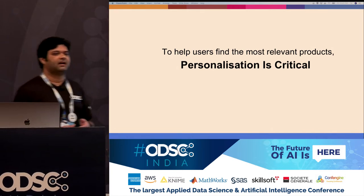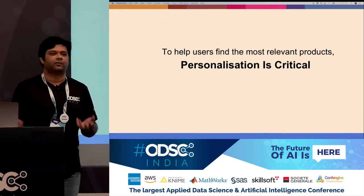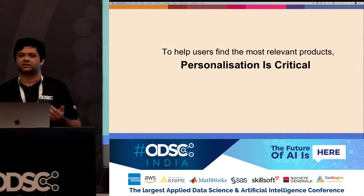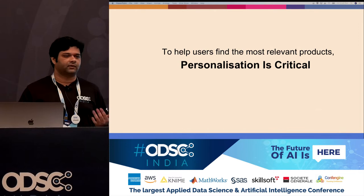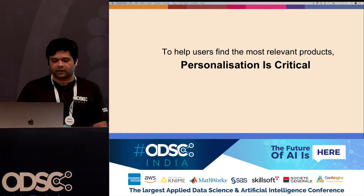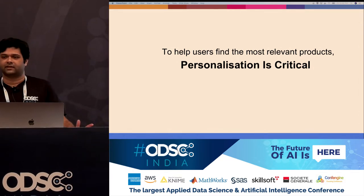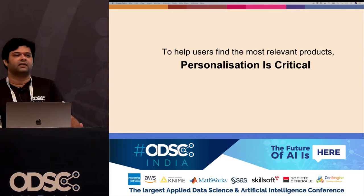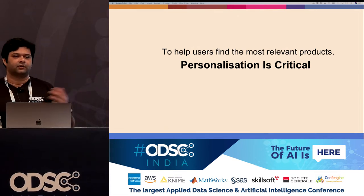Given this large dynamic catalog, you want users to find products they want very quickly — otherwise they'll drop out of their sessions and your conversion rate will go down. To help users find the most relevant products quickly, personalization is critical. Especially in a field where you have so many products, it's very easy to get lost, and if people don't find something interesting, they are just not going to buy it.